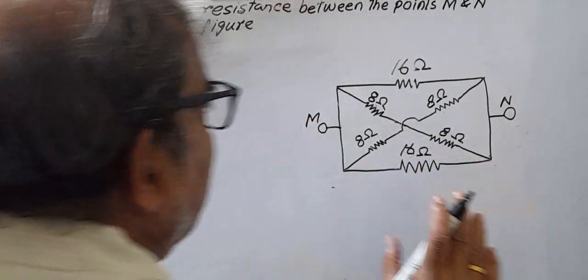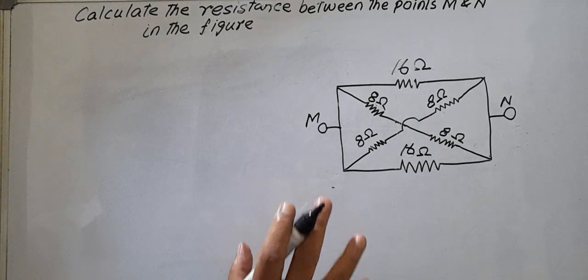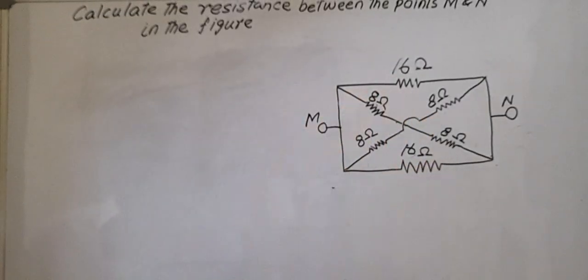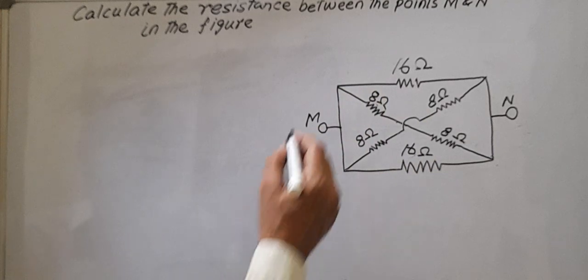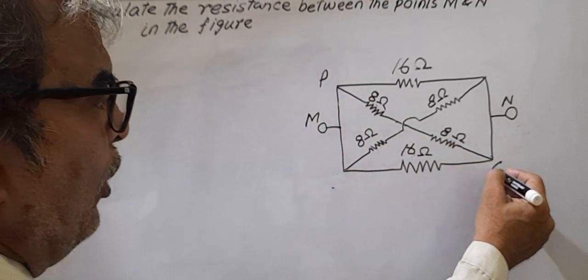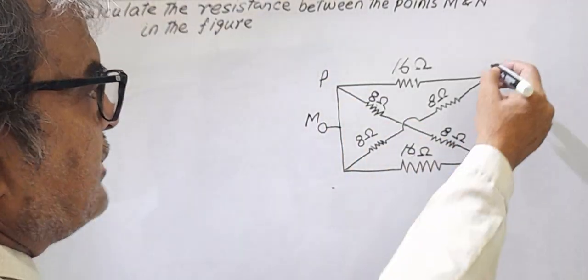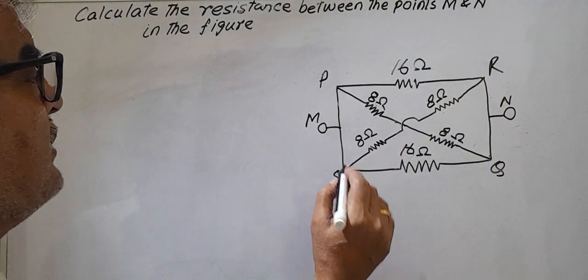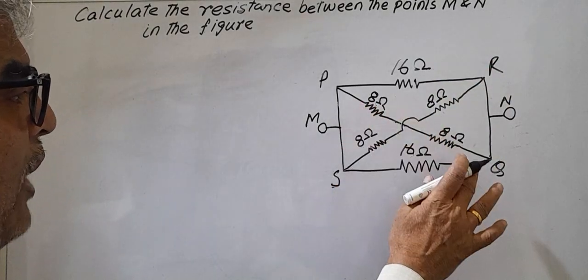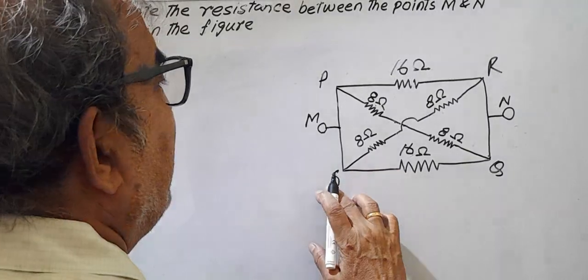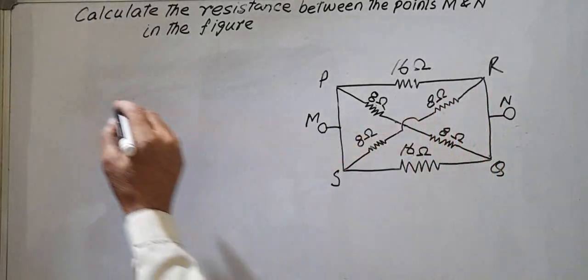So we know that there are two types of connections: one is series connections and another is parallel connections. Here both types of connections are present. Suppose this is P, this is Q, this is R, and this is S. So PQ are in series connection, and similarly SR is also a series connection.